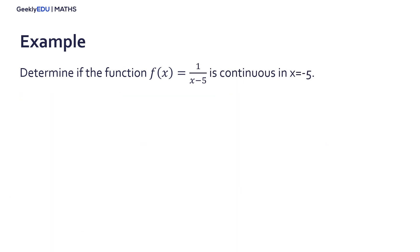Another example is to determine if a function is continuous in a given point, in this case in minus 5. Finding the limit of the function when x approaches to the given point plus 5, we have 1 divided by 0. This means that the function is not defined in that point and therefore we have an asymptotical or infinite discontinuity in 5.